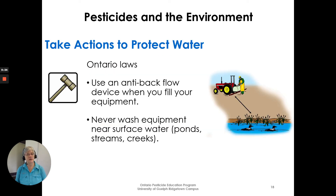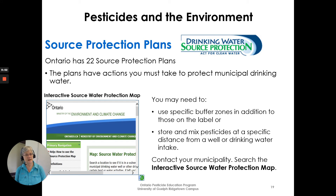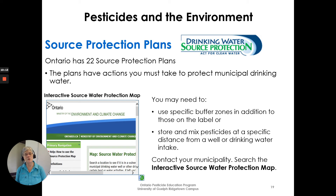Take actions to protect water. Ontario laws: always use an anti-backflow device when you fill your equipment, and never wash equipment near surface water, ponds, streams, or creeks. Ontario has 22 source protection plans. The plans have actions you must take to protect municipal drinking water. You may need to use specific buffer zones in addition to those on a pesticide label, or store and mix pesticides at a specific distance from a well or drinking water intake. Search the interactive source water protection map online to find information for your area.